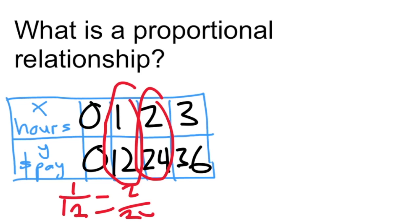They are both equal, they are both in proportion. That also goes for 3 out of 36. You simplify that, it is the same as 1 out of 12. So this is a proportional relationship.